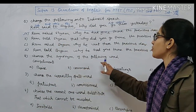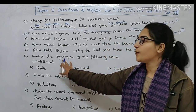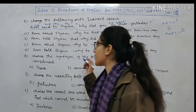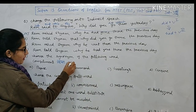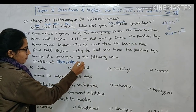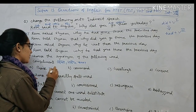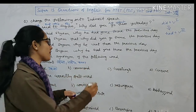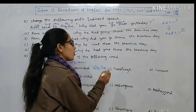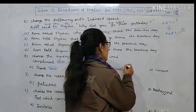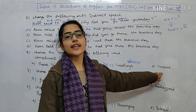Next question: choose the synonym of the word 'compliment'. Compliment means 'taarif' (praise). Option A is 'praise' — meaning taarif. Option B is 'command'. Option C is 'greetings' — meaning abhivaadan. Option D is 'censure'. So the synonym of compliment is praise — option A is correct.